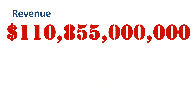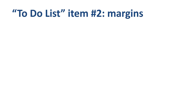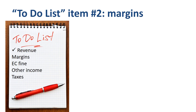On page 35 we find revenues by geography. 47% of Alphabet Inc's total revenue is US-based and 53% non-US-based. Now that we have taken a good look at revenues, it's time to review the margins that Alphabet Inc makes on those revenues. Before we fire up our calculators, it's good to synchronize our understanding of some acronyms.